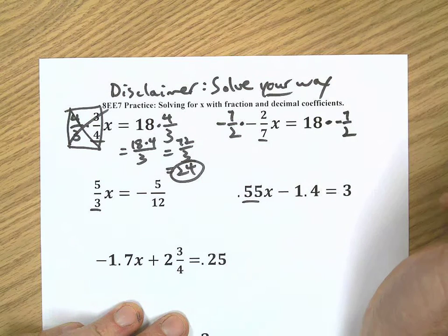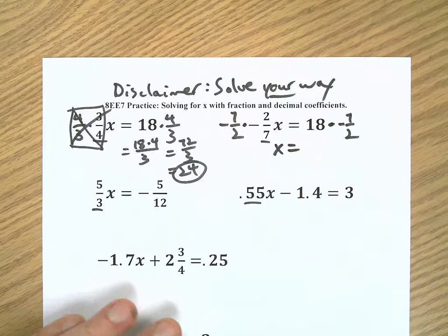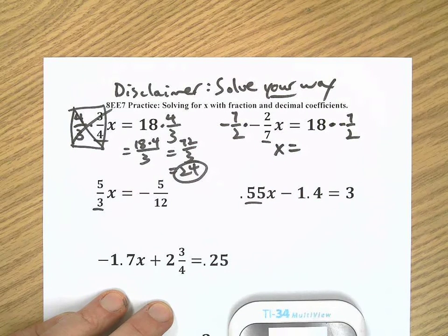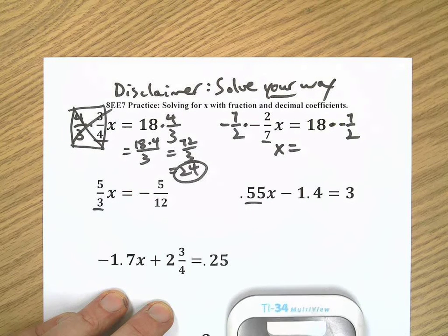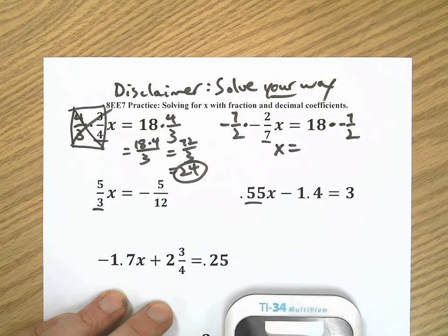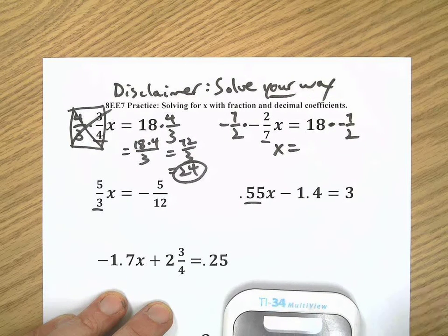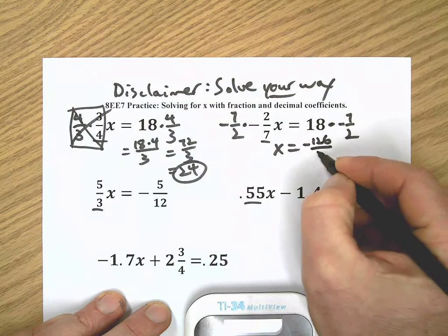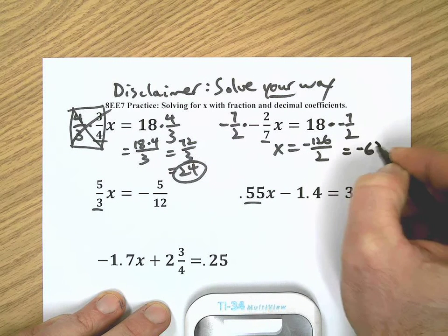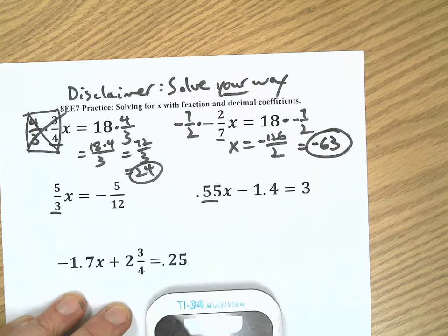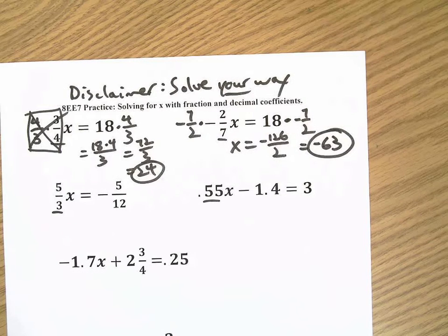In this case, I have x equals, I'm going to do a little calculator action here to keep the pace going. 18 times negative 7 is negative 126 over 2, therefore x equals negative 63 on that one.